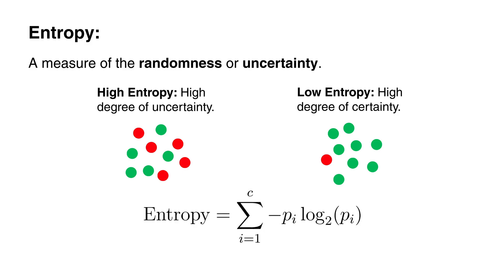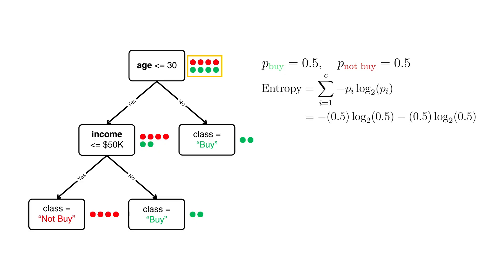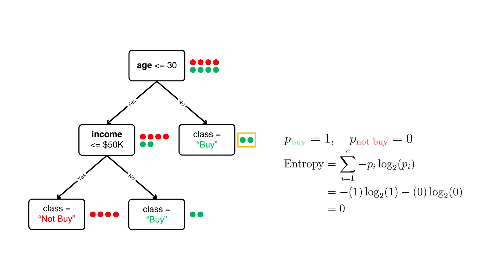To calculate the entropy of a node, we sum from i equals 1 to the number of classes c of negative p_i multiplied by the log of p_i, where p_i is the probability of class i — the proportion of samples in class i for this node. For our previous example, at the root node, the probability that a customer buys the product is 0.5, and the probability that they don't buy is also 0.5. Plugging in these values, we find that the root node's entropy is 1, which is the highest possible value. This makes sense because we're completely uncertain which class a new customer belongs to before making any splits. Notice that if we calculate the entropy for a completely pure leaf node, we get 0 — the minimum entropy — since there's no uncertainty about what class it could be.